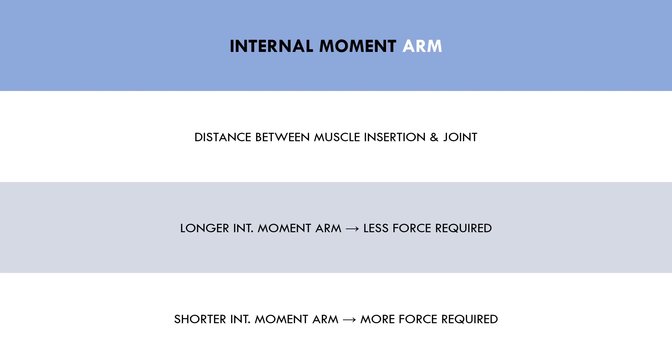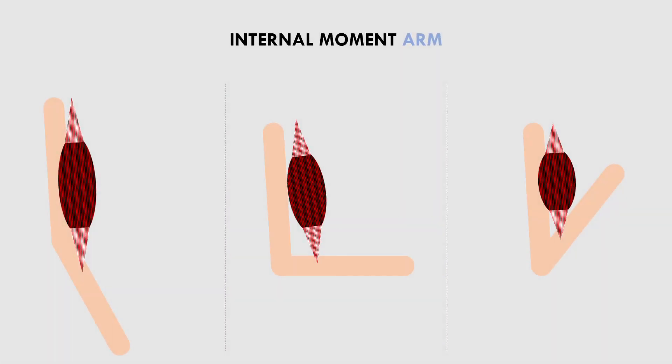Going back to our bicep curl example let's demonstrate this idea. At the start of the curl the internal moment arm is shorter which actually means the biceps are at a disadvantaged position. At the mid range the attachment site is further from the joint which will make the lift easier. And at the end range the internal moment arm is shorter once again making the lift harder on the biceps.